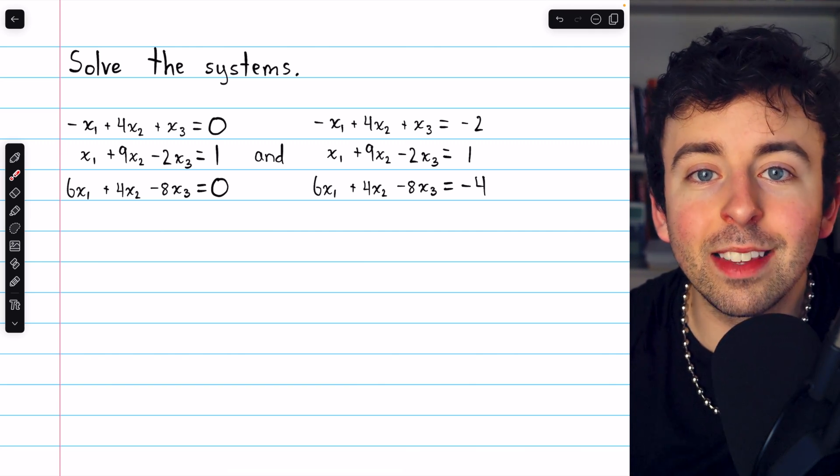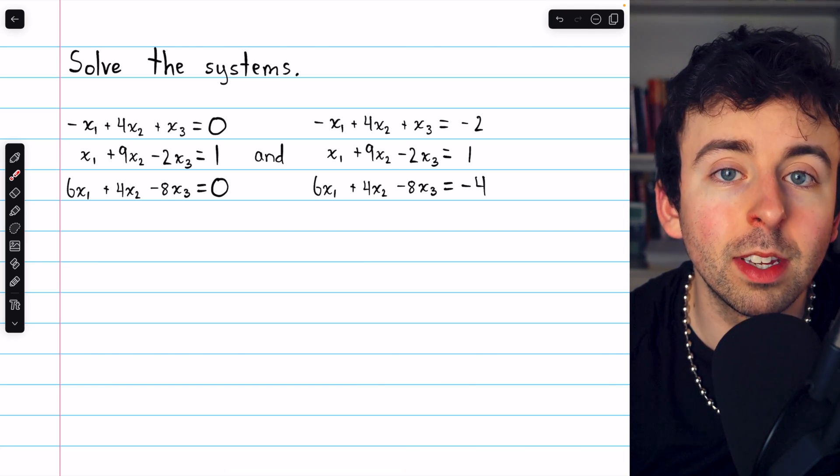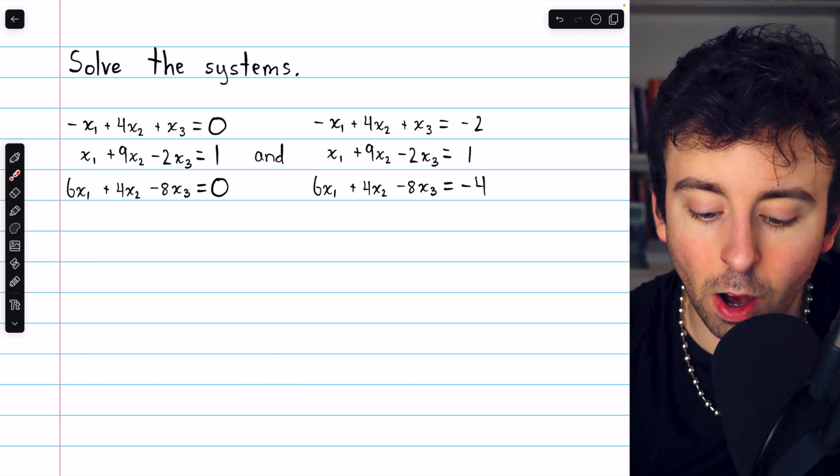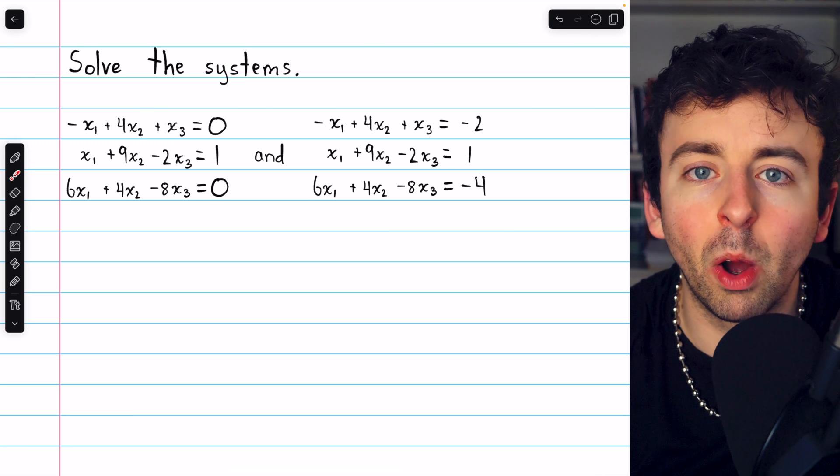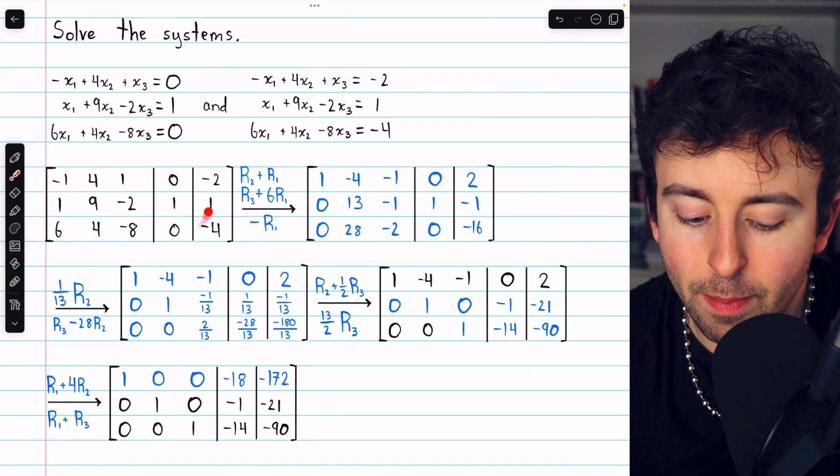So once again, we can set up an augmented matrix for both systems simultaneously by having a column for these constants and a column for these constants attached to the same coefficient matrix. And here is that matrix.